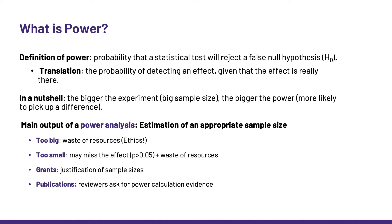If we write a grant application, we need to justify the sample sizes we propose, and more and more funding bodies are asking for the actual power calculations. Scientists hate it, of course, but it is a good thing, really, as it makes people think more about experimental design — and it is good news for the mice. Finally, for publications, reviewers are starting to mention power. If an author claims there is no effect or no difference between, say, two genotypes, a reviewer may come back and say, did you have a sample big enough to pick it up? So power matters.